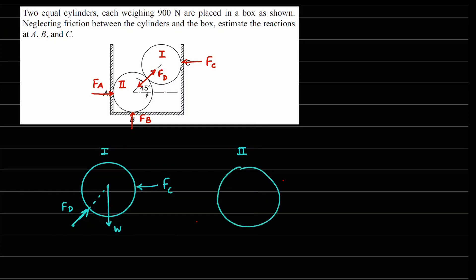Similarly, let's draw the free body diagram for cylinder number two. For cylinder two we expect one horizontal reaction FA, one force FB coming from the bottom, one force FD along the 45 degree line, and the weight W acting downwards.